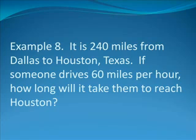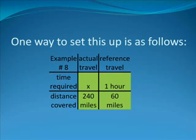Example eight: It is 240 miles from Dallas to Houston, Texas. If someone drives 60 miles per hour, how long will it take them to reach Houston? One way to set up the problem is as follows. On your screen, you note the items compared and the characteristics compared. Actual travel versus reference travel are the column titles. Time required versus distance covered are the row titles.